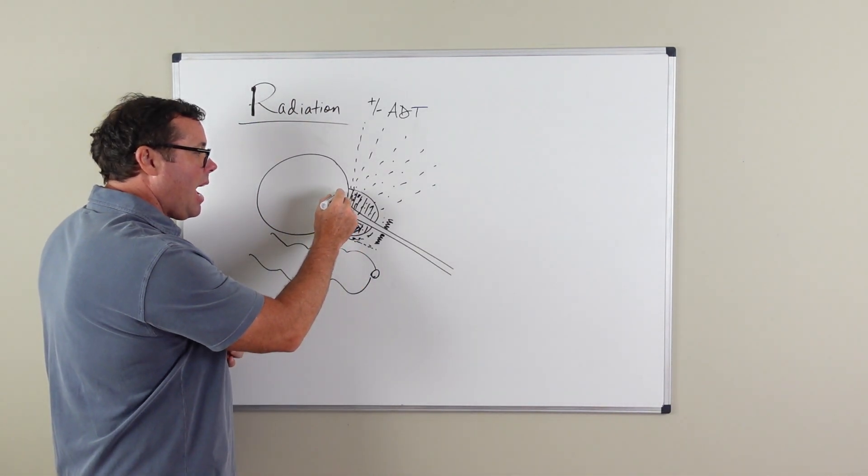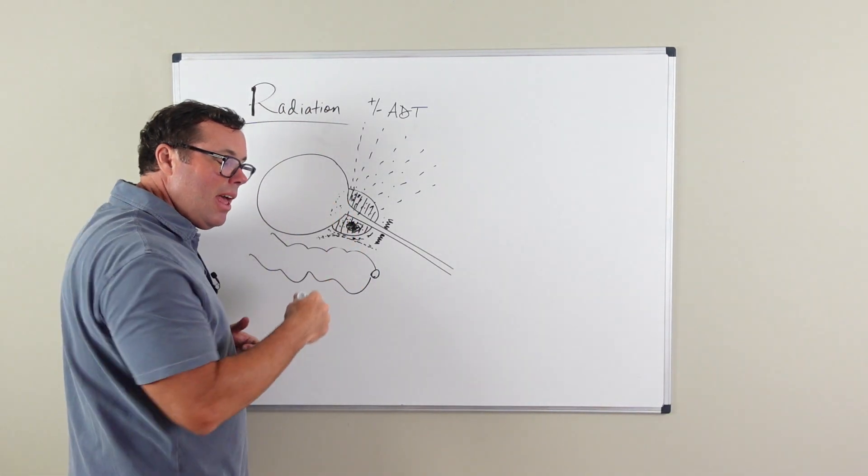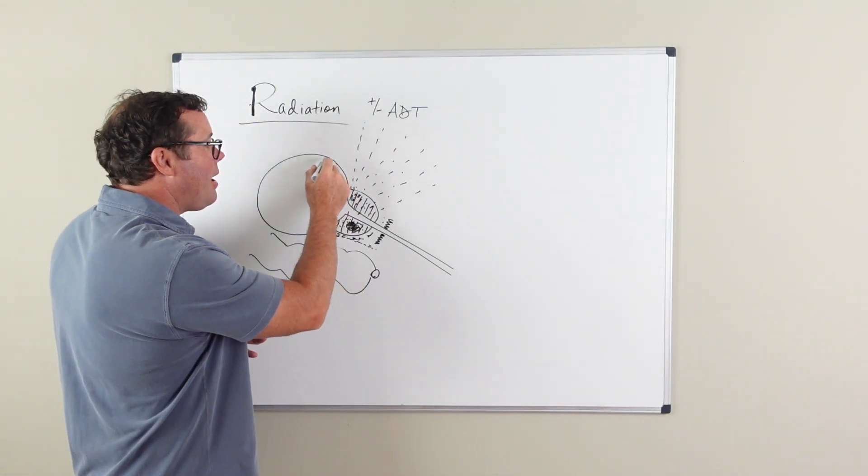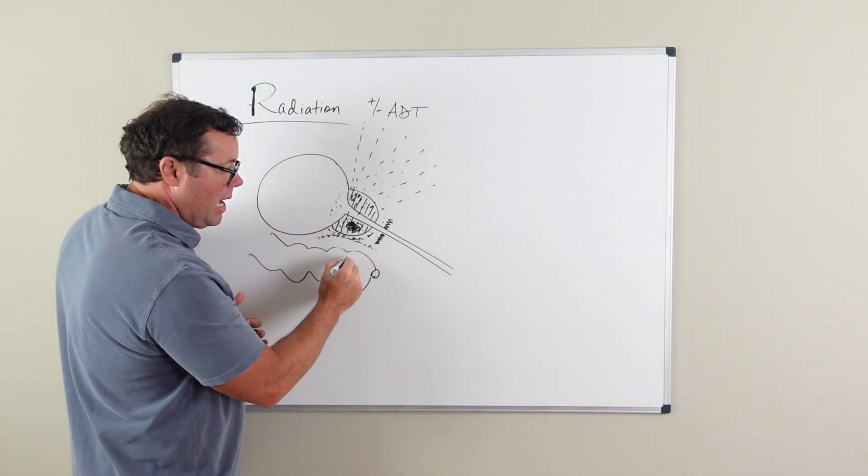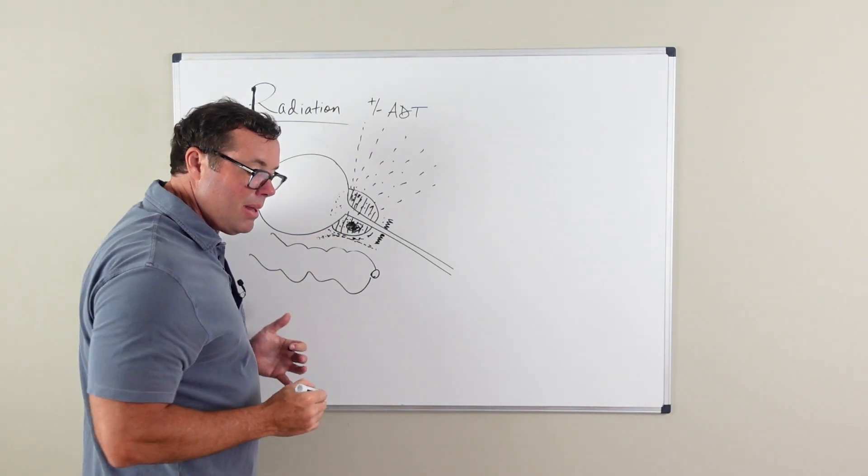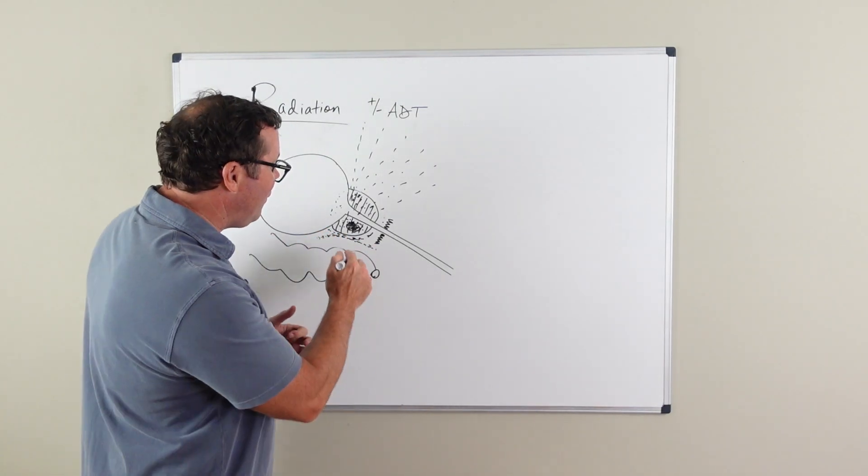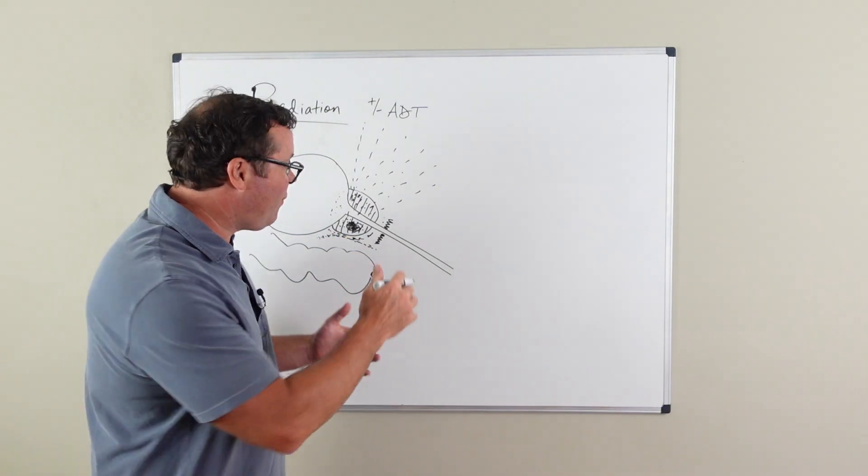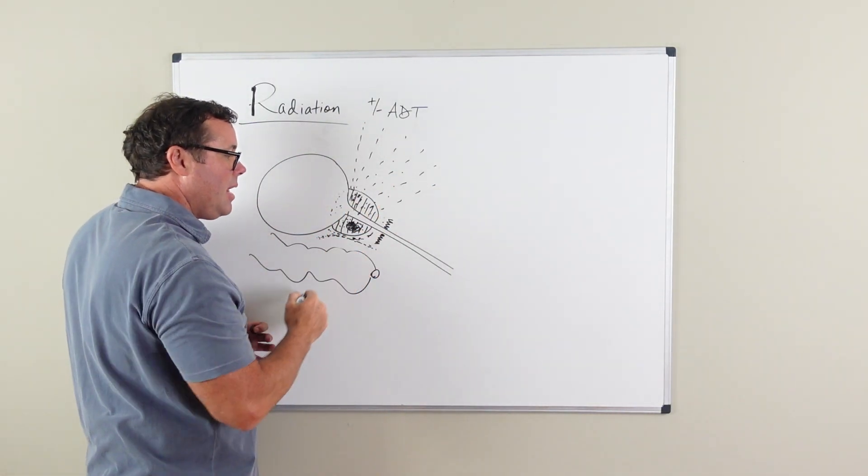there still can be some scatter of radiation to healthy tissue. So the bladder can be affected, the rectum can be affected, and even this neurovascular bundle that is important in preserving erectile function can also be affected by scatter of radiation.